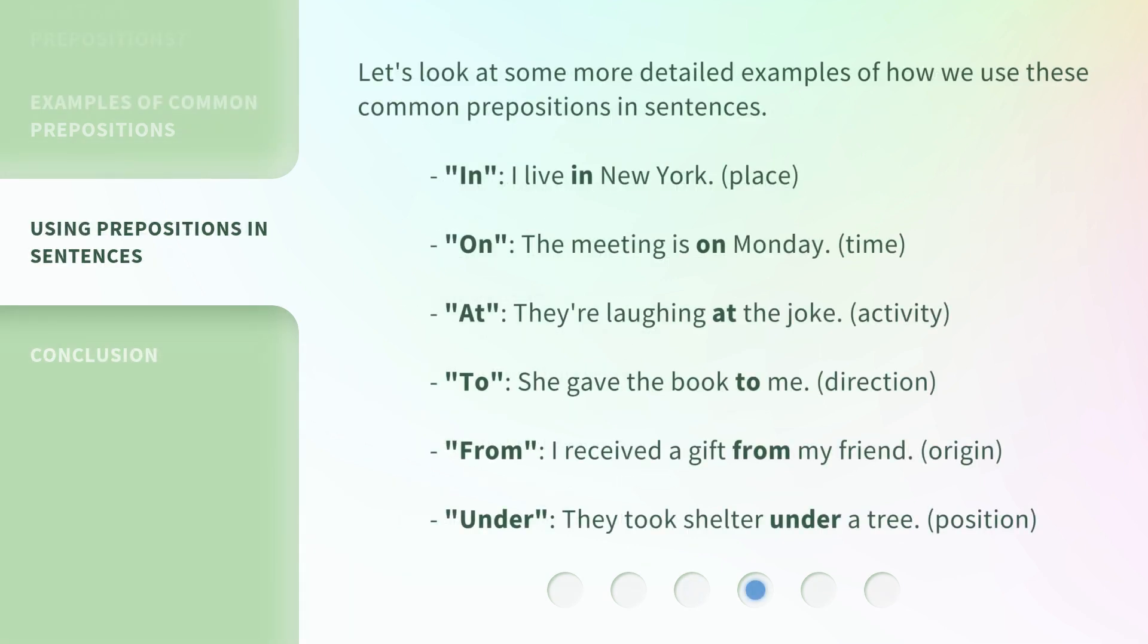Let's look at some more detailed examples of how we use these common prepositions in sentences. In: I live in New York (place).